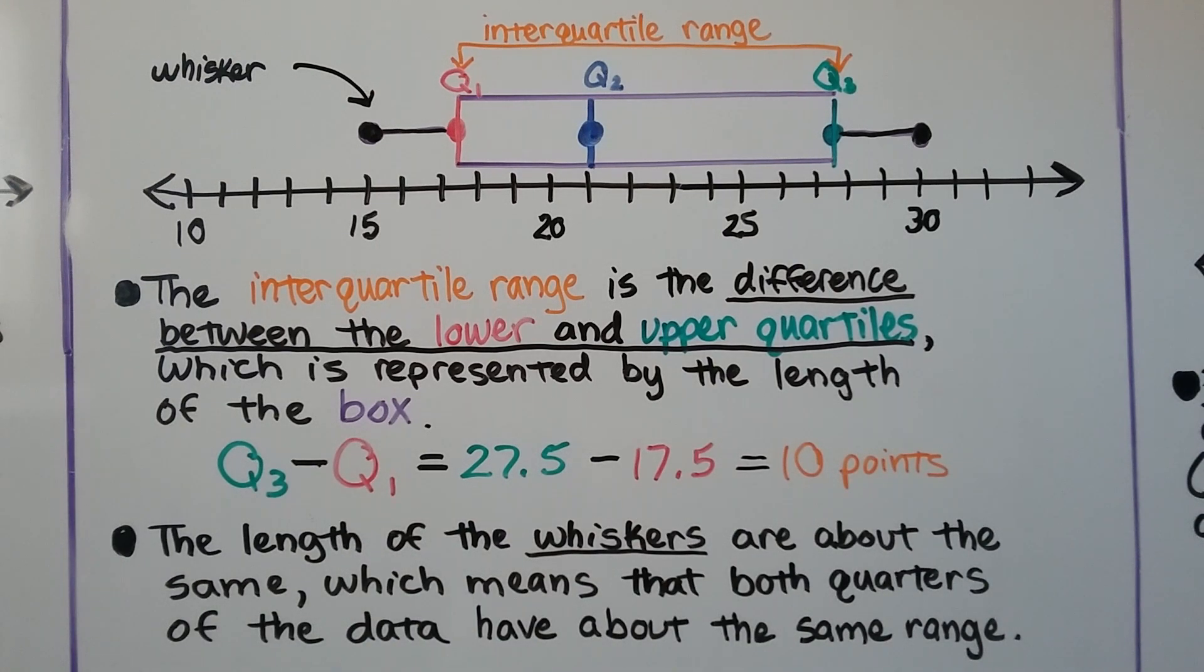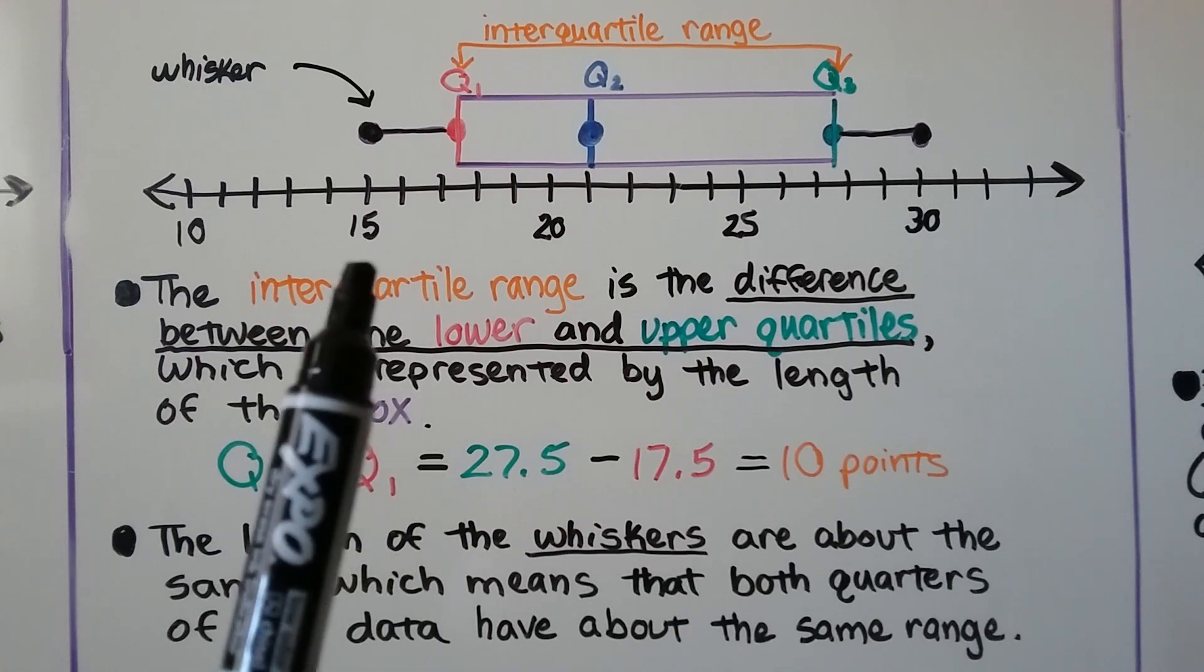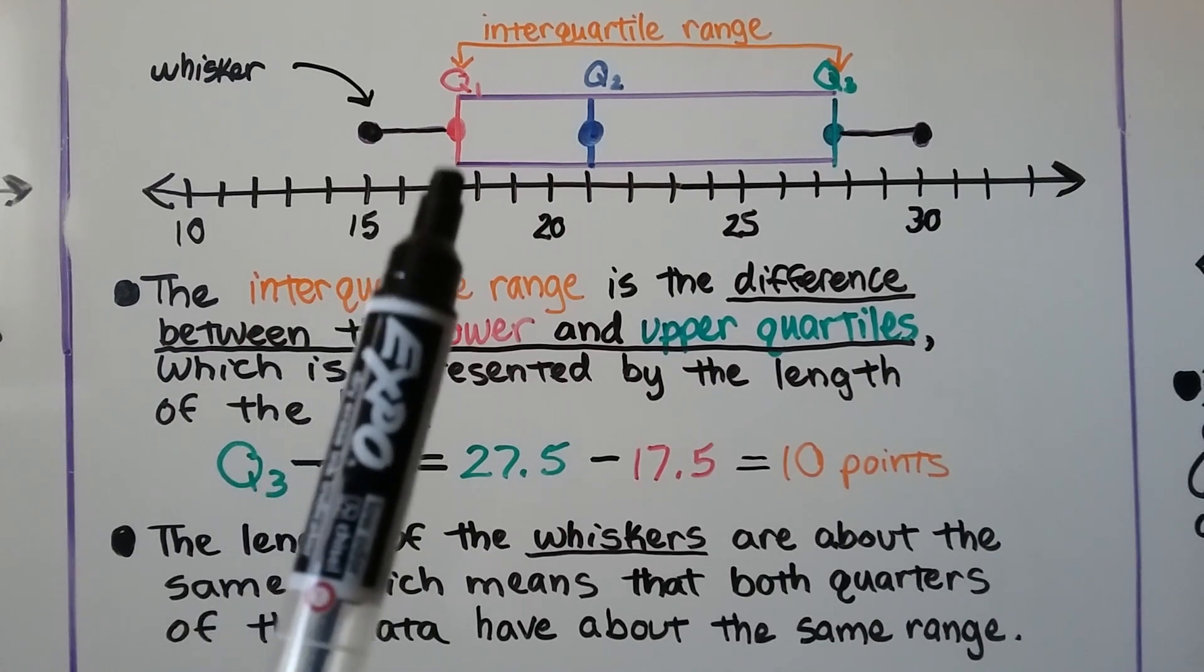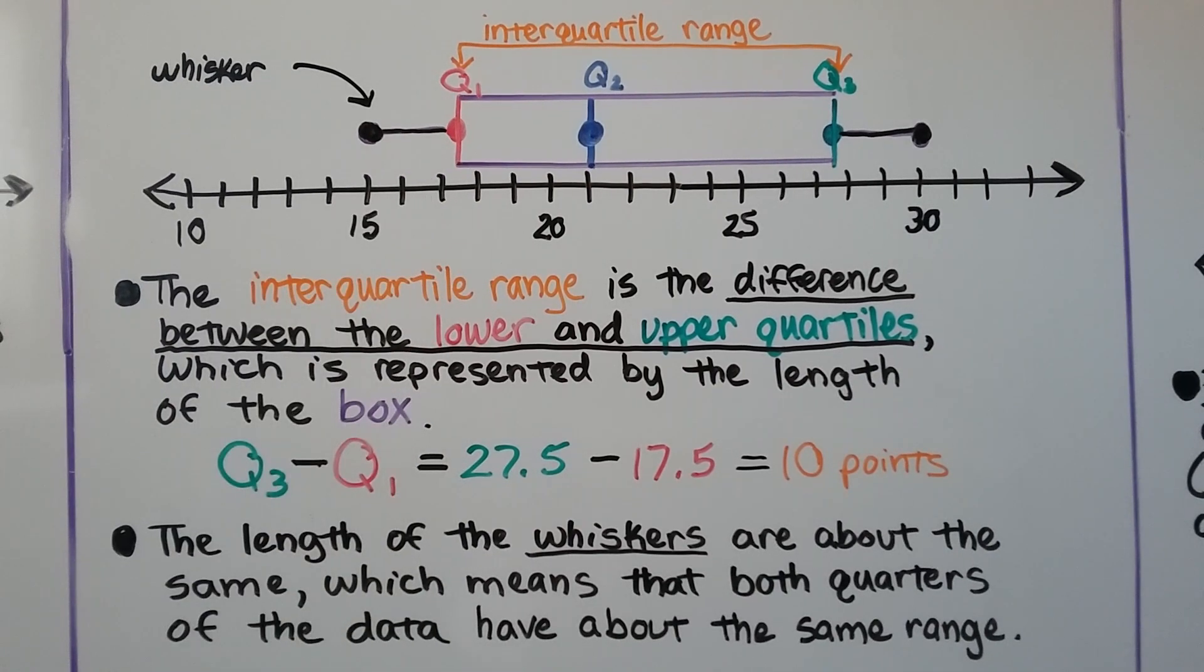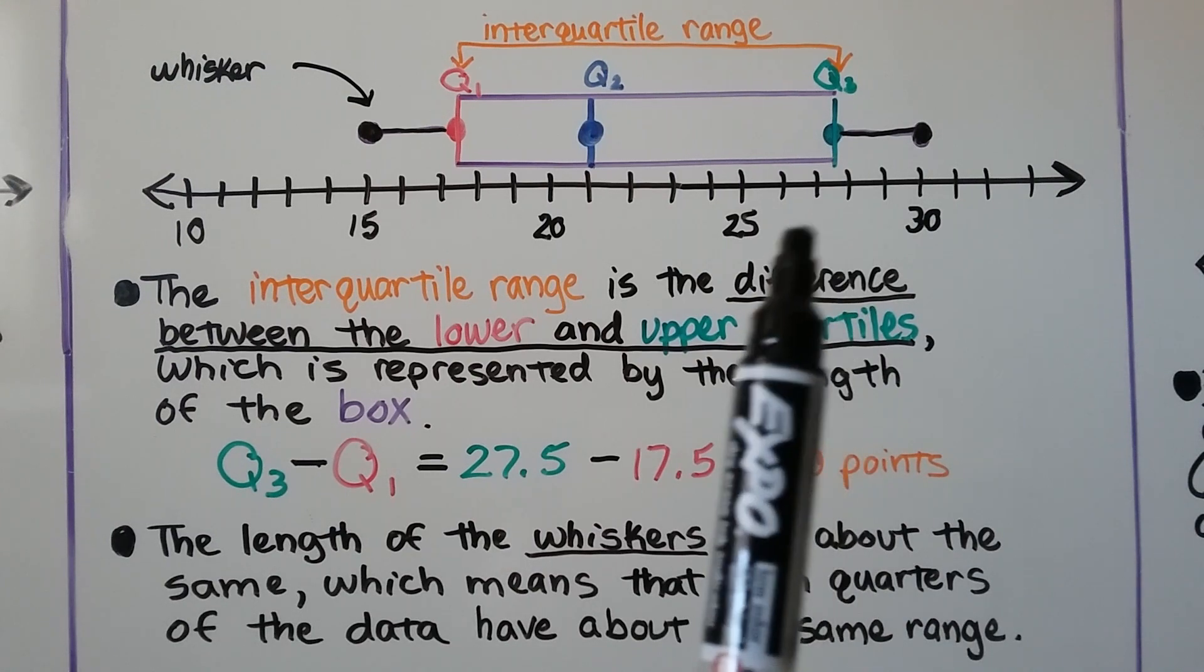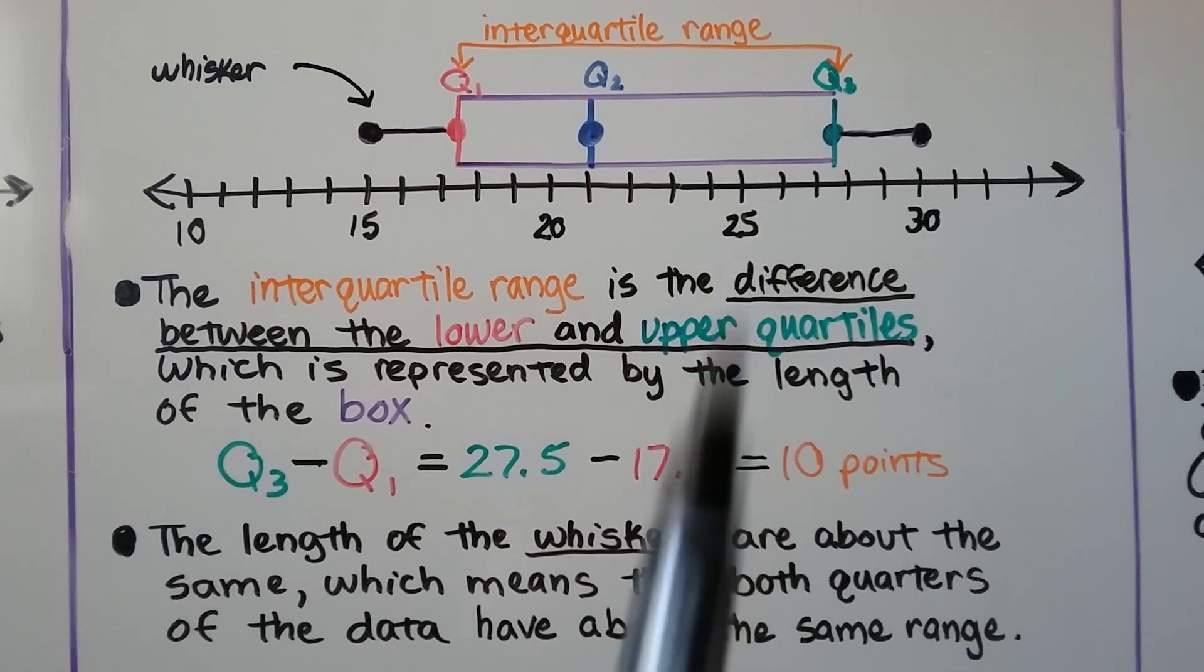And the length of the whiskers are about the same, which means that both quarters of the data have about the same range. So remember, the first quartile is the median of the lower half of the data set, and the third quartile is the median of the upper half of the data set.